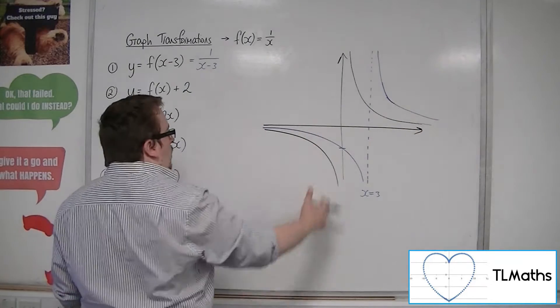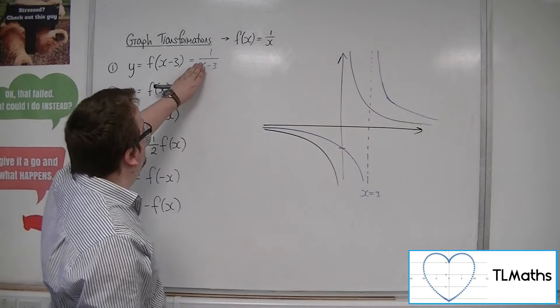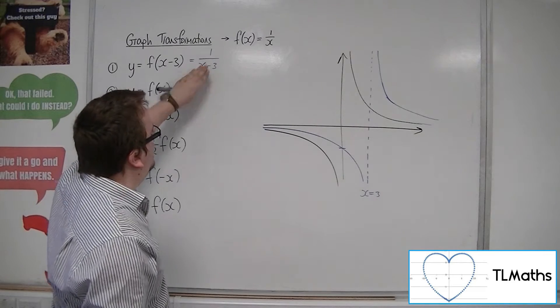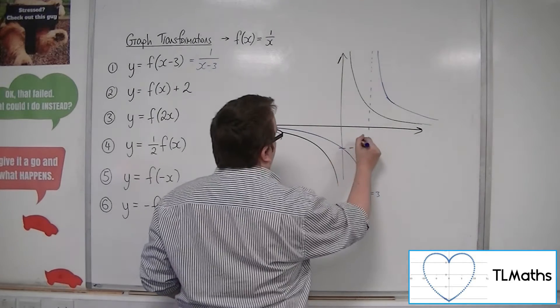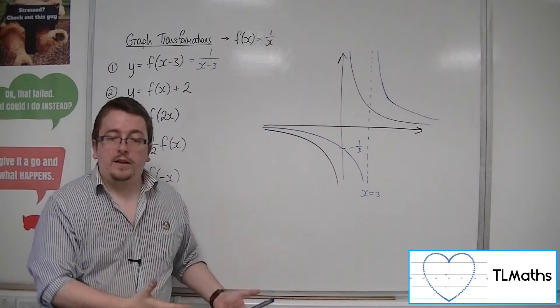So, we can work out where it crosses the y-axis by putting x is 0, and we get 1 over minus 3. So, minus a third. And that's what f of x minus 3 would look like.